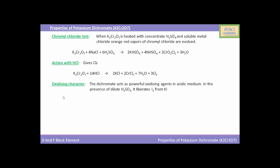Now we come to the oxidizing character of potassium dichromate. The dichromate acts as a powerful oxidizing agent in acidic medium. In the presence of dilute H₂SO₄, it liberates iodine from potassium iodide. You can see KI, i.e. potassium iodide, when reacted with potassium dichromate in the presence of dilute H₂SO₄, yields K₂SO₄, Cr₂(SO₄)₃, i.e. chromium sulfate, water, and iodine.